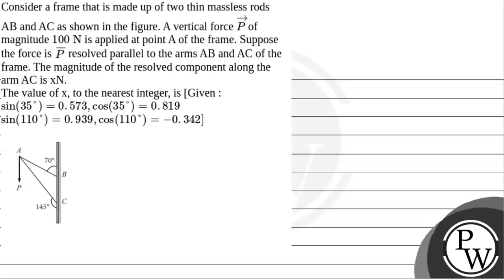Hello, let's read the question. The question says that consider a frame that is made up of two thin massless rods, AB and AC, as shown in the figure.